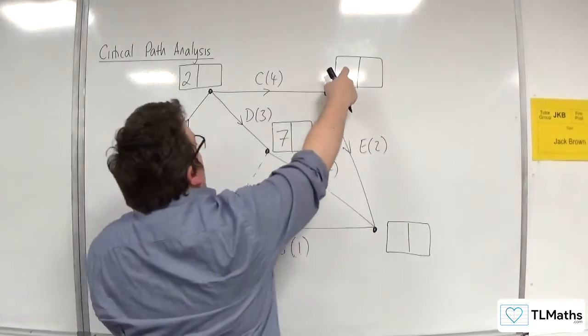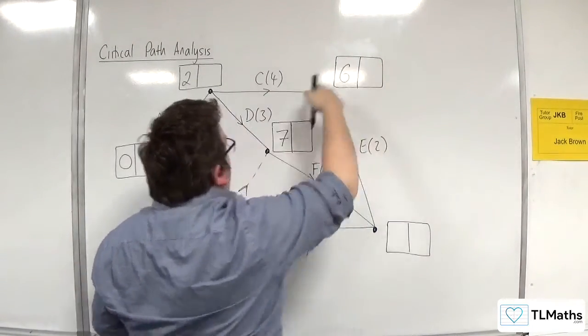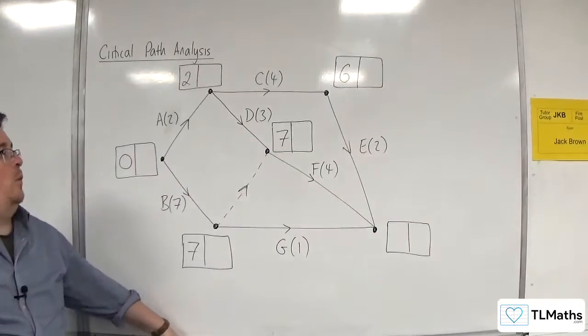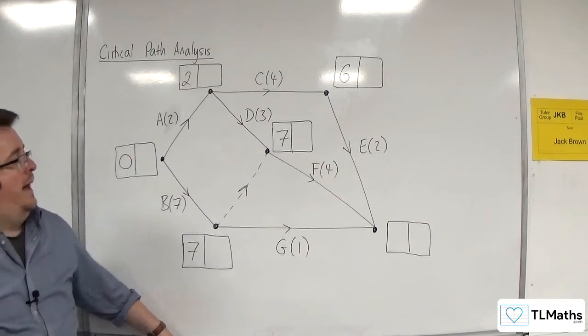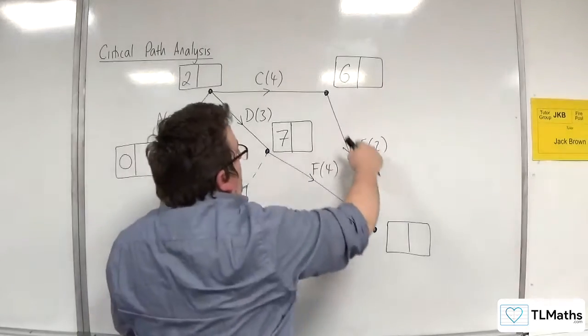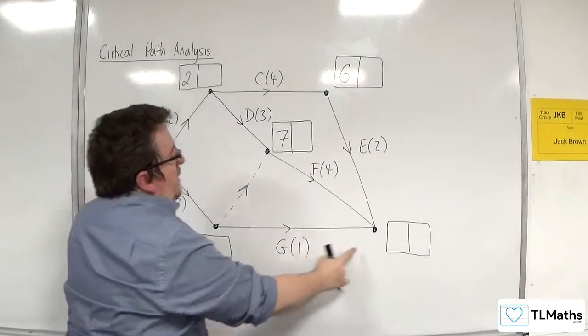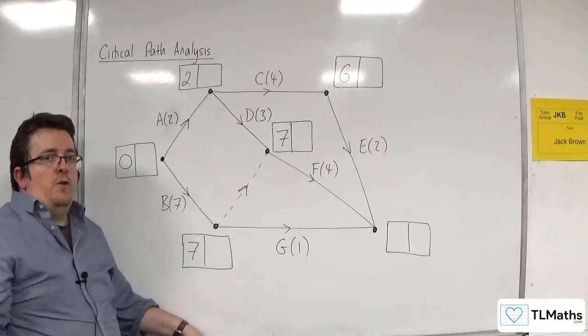So how about this one up here? Well, I've got two plus four, so six. That's the only arrow going in there, so I only need to consider that one route. And now for our final box here. We've got six plus two is eight. Seven plus four is 11. Or seven plus one is eight. So it's either eight or 11.